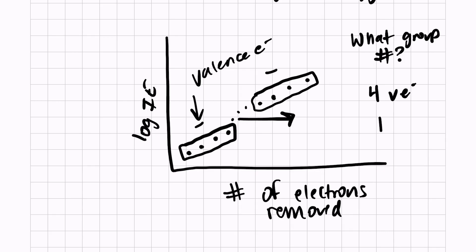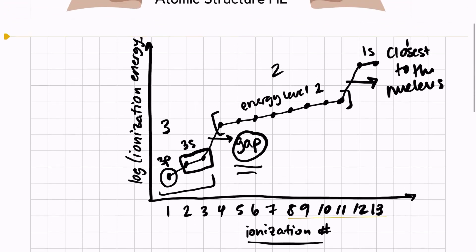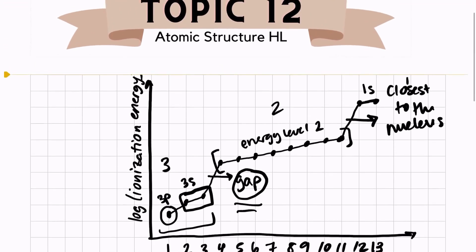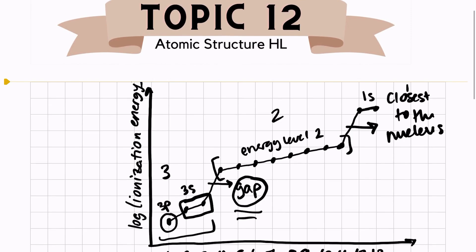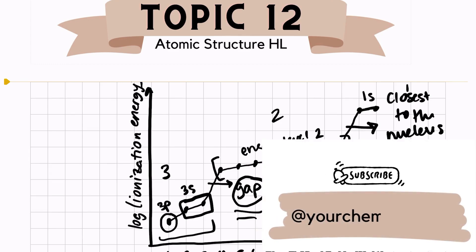All that chapter 12 covers that's different is that it shows the ionization energy of removing every single electron of an atom and how we can use that to prove that there are energy levels in an atom. I hope this was helpful. If you have any other questions, make sure and leave a comment. Thank you so much for stopping by.